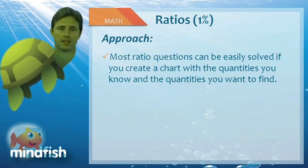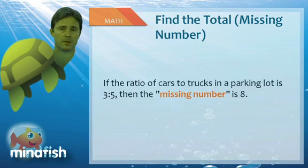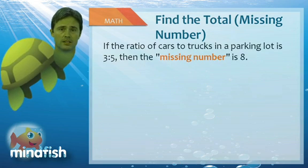So let's look at how to find the missing total for a ratio question. Most ratio questions will give you the two parts. What we're calling here the missing total or the missing number is essentially just adding those two parts together. So if a problem said that the ratio of cars to trucks is 3 to 5, the missing number would be 8.